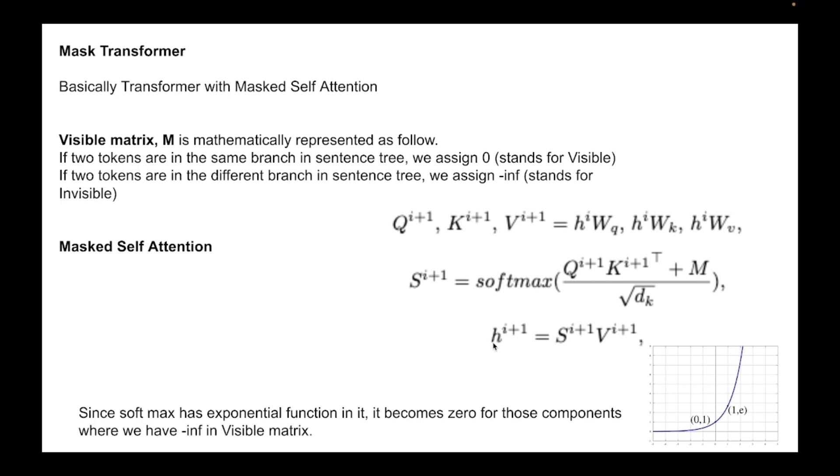Now one additional thing that happens in the masked self-attention is we add this mask matrix which is our visible matrix. Now if you see how we have defined our visible matrix, we assign zero when tokens are allowed to interact and we assign negative infinity when they are not allowed to interact. So because softmax has an exponential function in it, it becomes zero for those components where we have negative infinity in visible matrix. So this makes sure that only those tokens that we have defined in the visible matrix who are allowed to interact will get the interaction of this matrix multiplication. Rest of them will be zeroed down.